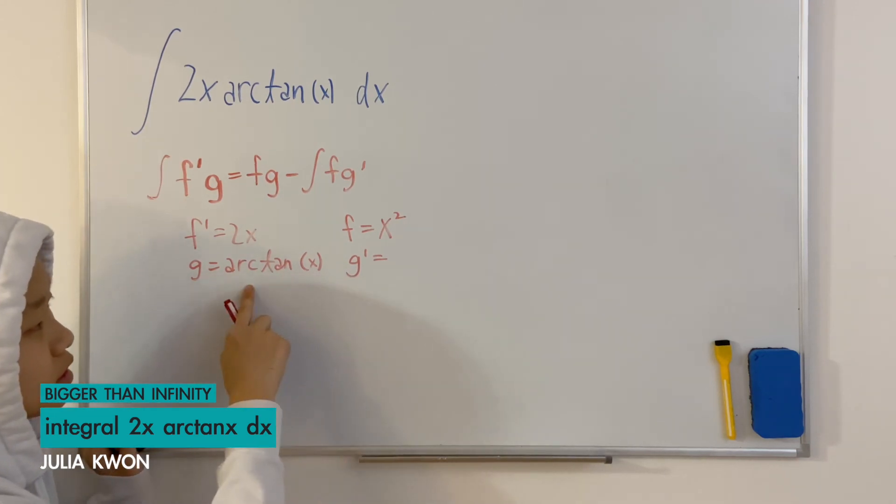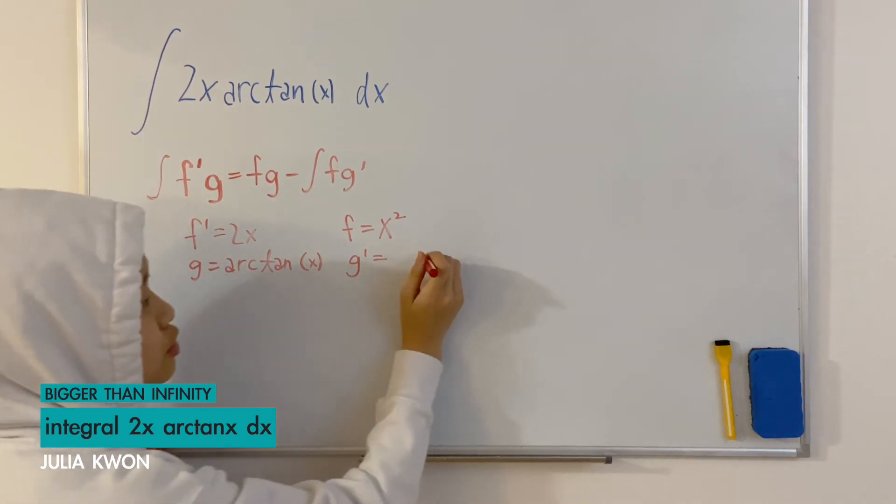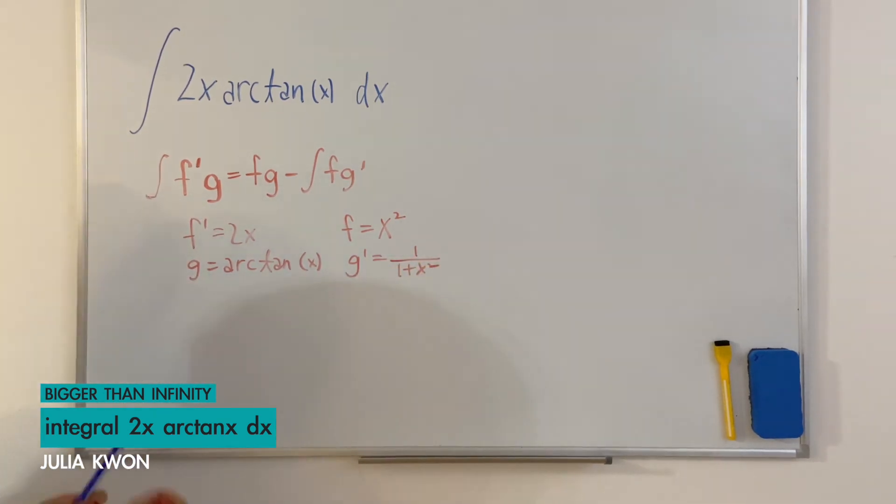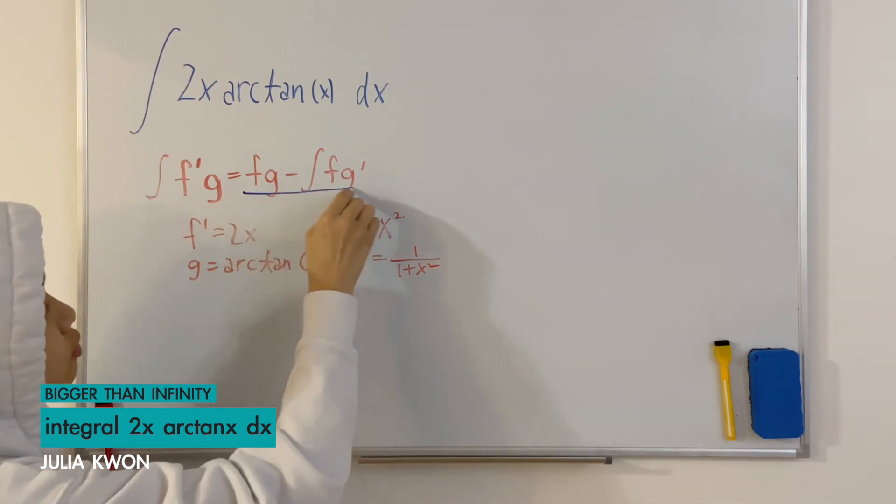g prime would be the derivative of arctangent x which is 1 over 1 plus x squared and now we can just substitute what we found into this equation.